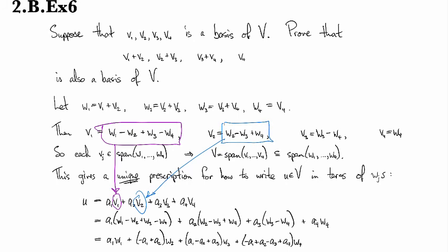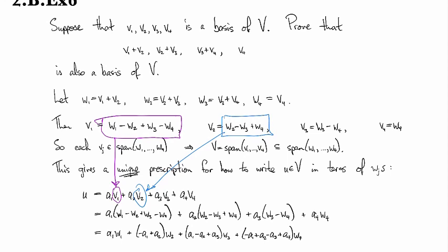And then I have minus A1 plus A2 minus A3 plus A4 as my coefficient for W4. And so by the word prescription, I mean this is like prescribed in the sense like there's no wiggle room whatsoever. This is just what it is. It's forced upon you. So that means that we're done. We've got a unique way to write U in terms of the WJs.